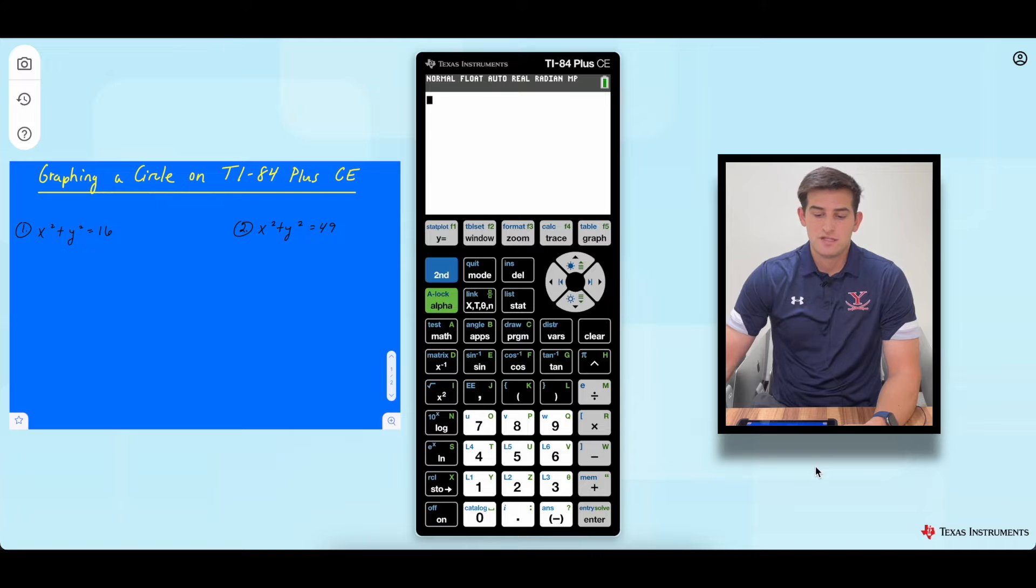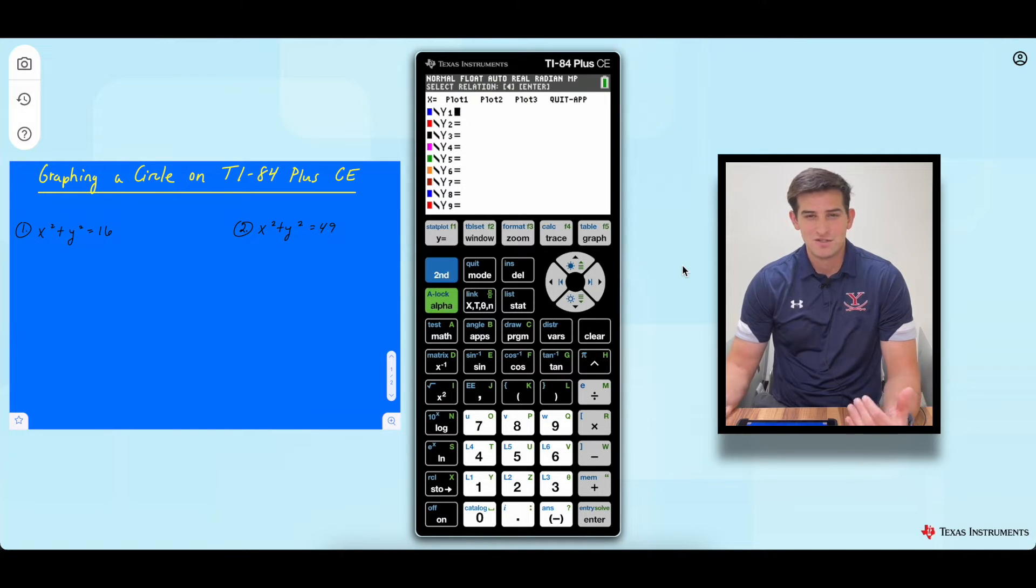So when we go to our calculator and we're trying to graph anything, notice that when we hit y equals, that's what we need to make sure our equations are solved for, y, right? Well, in our standard equation for a circle, we have x squared plus y squared equals r squared, right?